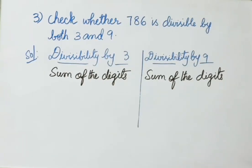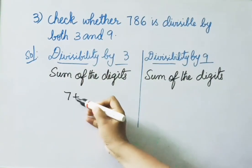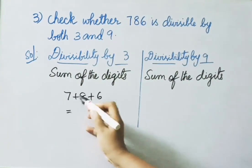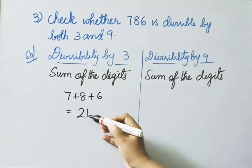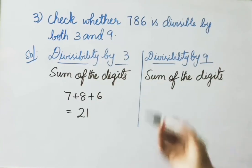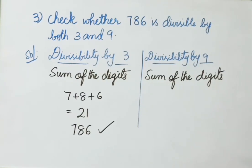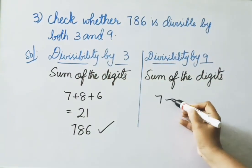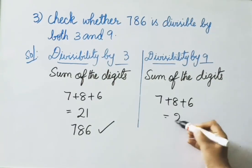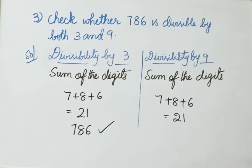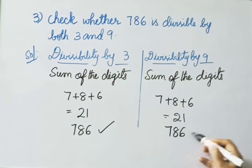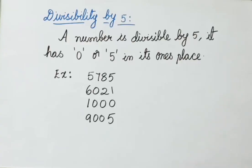Third sum: Check whether 786 is divisible by both 3 and 9. For divisibility by 3: 7 plus 8 plus 6 equals 21. Since 21 is a multiple of 3, 786 is divisible by 3. For divisibility by 9: the same digit sum is 21. Since 21 is not divisible by 9, 786 is not divisible by 9.